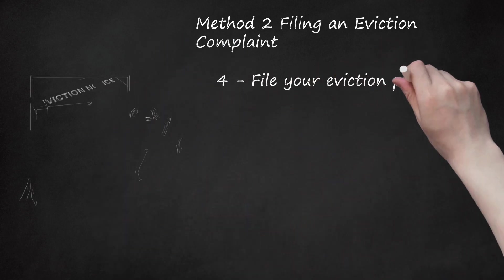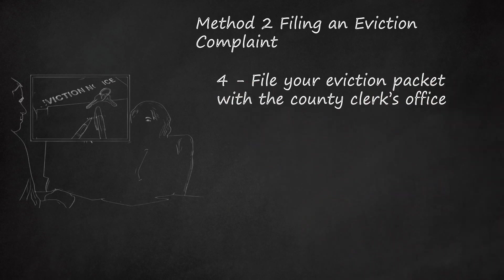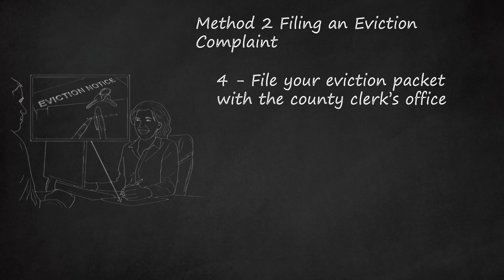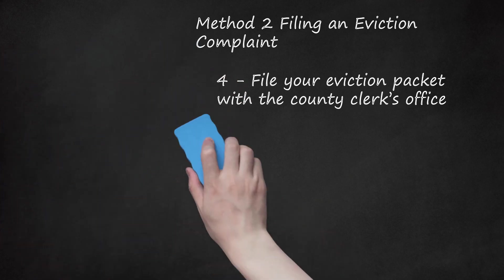File your eviction packet with the county clerk's office. A completed eviction packet will contain your completed eviction complaint, five copies of the lease agreement and notice provided to the tenant, as well as a pre-stamped envelope addressed to all occupants and tenants. Have the complaint notarized and file it at the clerk's office, or swear to it in front of a clerk and pay the relevant complaint filing fee. In most counties the filing fee is $185.